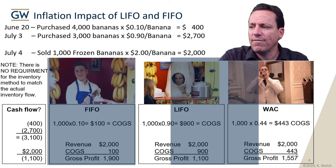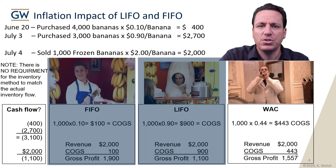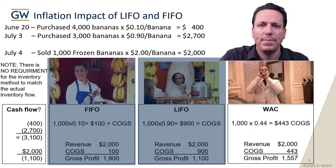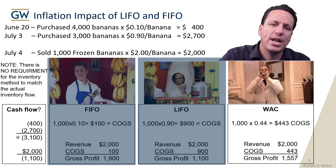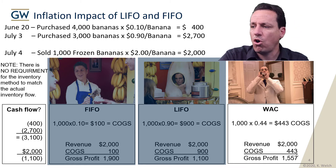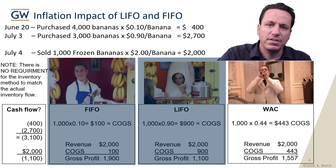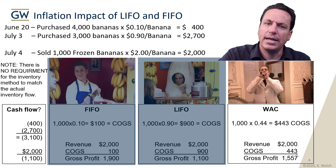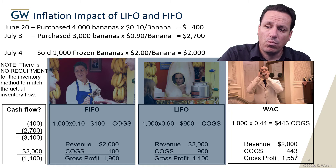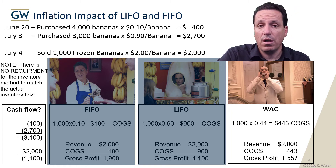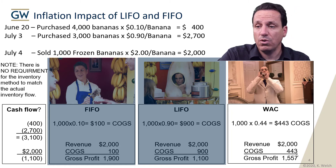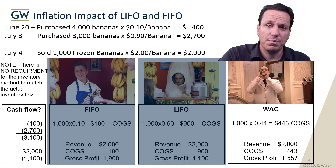Weighted average cost is always going to be in between FIFO and LIFO because it's a smoothing mechanism — like spreading peanut butter — that smooths out costs across all inventory items. People enjoy weighted average cost for that reason and its simplicity. But generally, we have to think about what's happening economically when choosing between FIFO and LIFO, since we might be in inflationary or deflationary time periods.